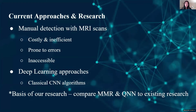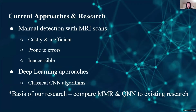Currently, the most common form of tumor detection is manual detection through MRI scans, or magnetic resonance imaging. These detailed images are examined manually by radiologists, which poses several issues. The amount of data has been rapidly increasing, making it more inefficient and tedious to manually sort through. It also relies heavily on the experience of the radiologists, which can be prone to error, and many areas don't have access to the necessary resources or radiologists.